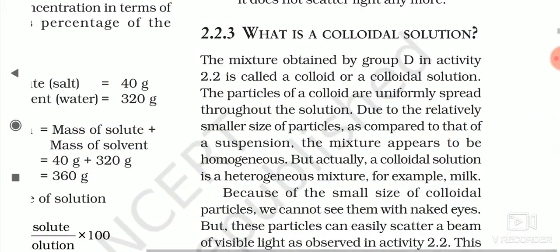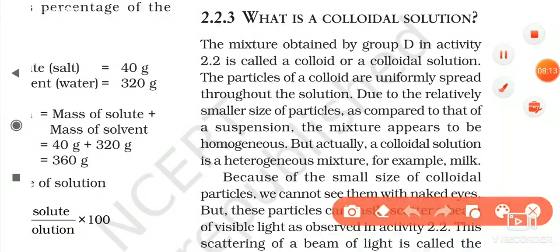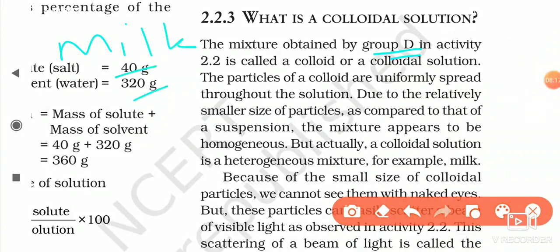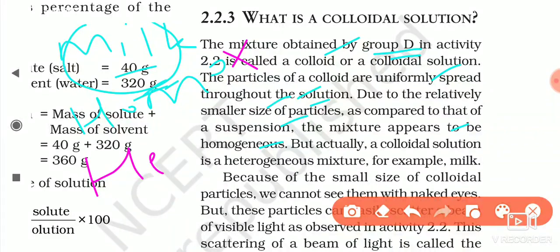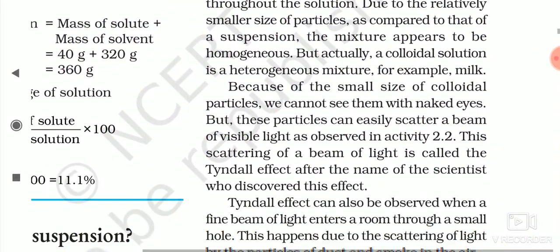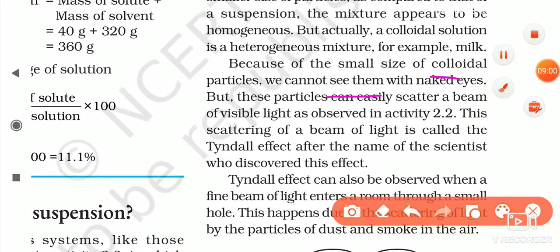Next topic: what is a colloidal solution? The mixture obtained by group D — milk — is called a colloid because the particles of colloid are uniformly spread throughout the solution, due to the relatively smaller size of the particles compared to that of suspension. Suspension particles are larger than colloidal particles. The mixture appears to be homogeneous, but it is not truly homogeneous — it is heterogeneous. Because of the small size of colloidal particles, we cannot see them with the naked eye, but they can scatter a beam of visible light.